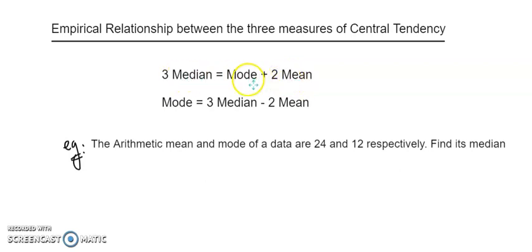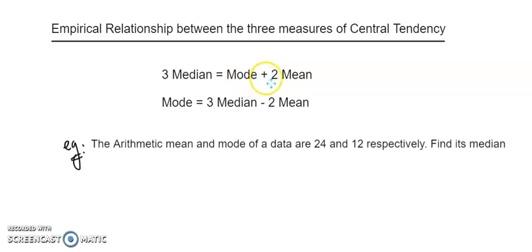If either two of the values are given, then you can find the third one. There is a proven relationship: three times median equals mode plus twice the mean. Or, mode equals three times median minus two mean.